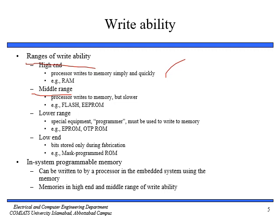Figure 5.2 in your book gives a more in-depth view of writeability along with data storage permanence. In-system programmable memory can be written to by the processor in an embedded system. This type of memory falls in the high-end and middle range of writeability, meaning it can be written by the processor directly within the embedded system.